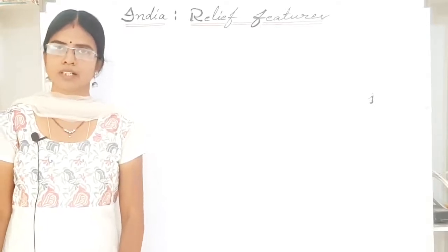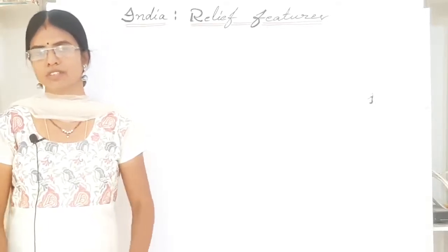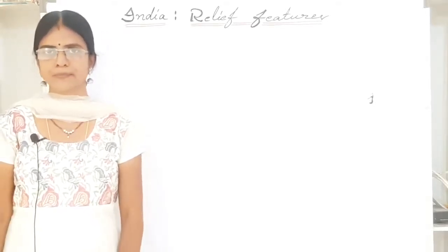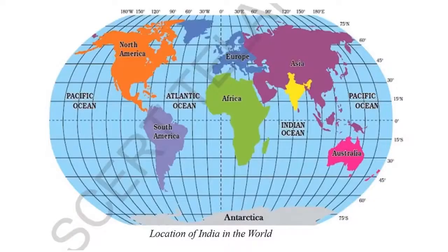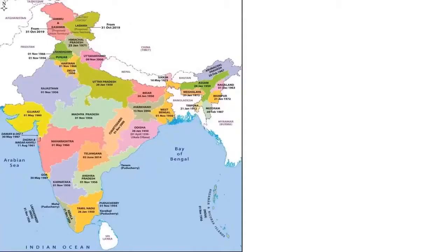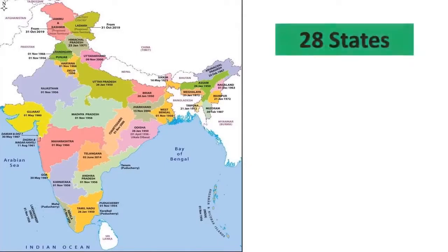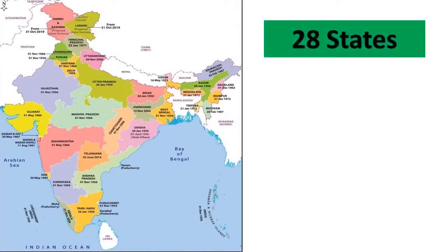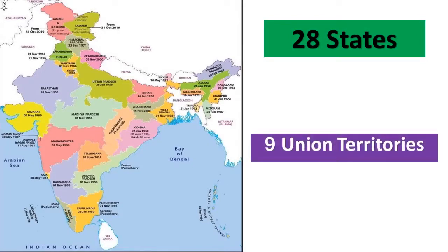Let us have a look at the location of our country. India is a country that covers the greater part of South Asia. India now has 28 states since Jammu and Kashmir has been converted. Our country now has 9 union territories, with Jammu and Kashmir as one new entrant and Ladakh as the other.